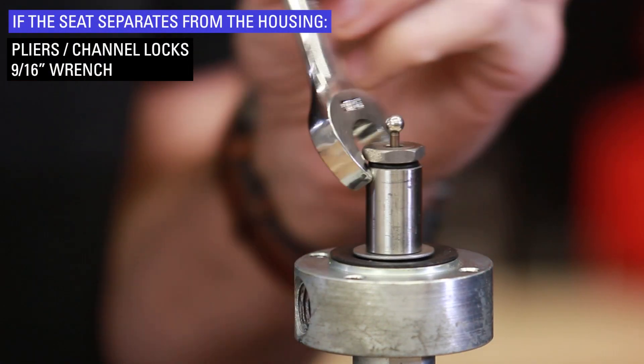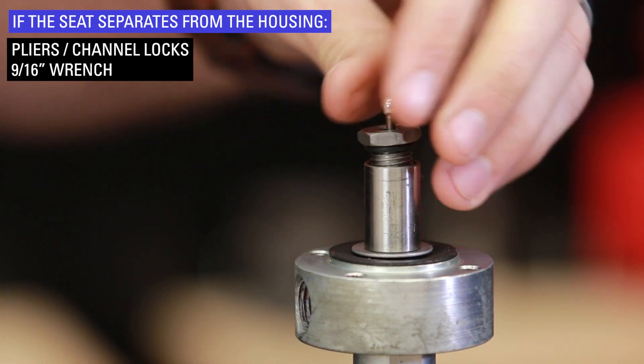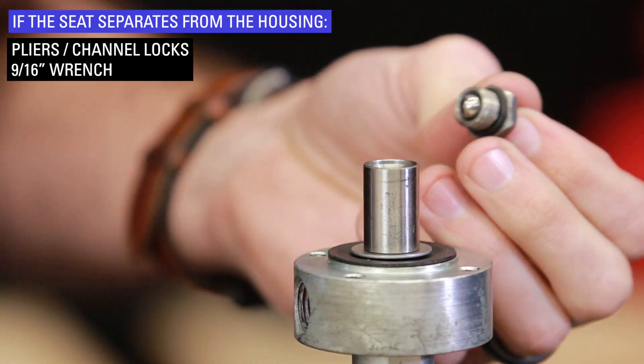If the seat separates from the housing, discard the pilot plug, seat, O-ring, and spring. Keep the housing.